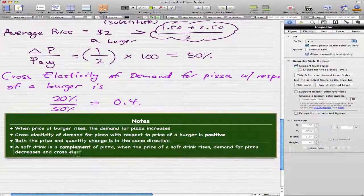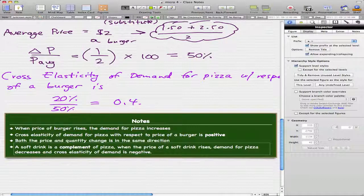A soft drink is a complement of pizza. When the price of a soft drink rises, demand for pizza decreases and the cross elasticity of demand is negative. That's all I want to teach you for today. Sorry for all the technical troubles, but please rate, comment and subscribe and I'll see you guys next time.